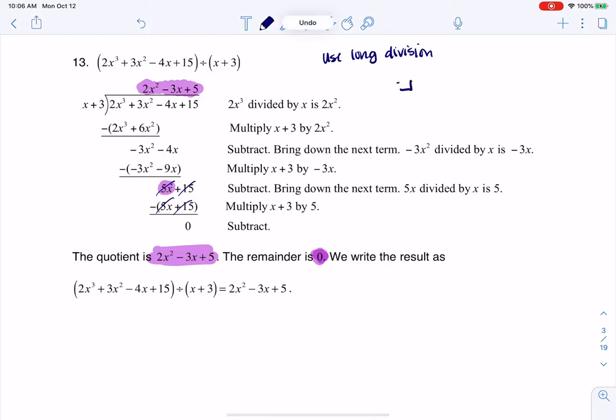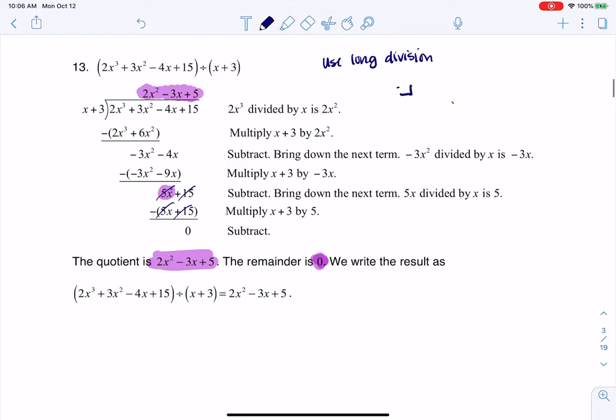I just find it so much easier. Let me go ahead and put negative 3 here. And then our lead coefficients were 2, 3, negative 4, and 15.